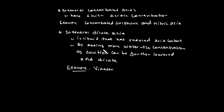You can dilute an acid by adding more water. When more water is added, the concentration of the solution decreases and the acid becomes diluted. This is the standard way to reduce acid concentration in the laboratory.